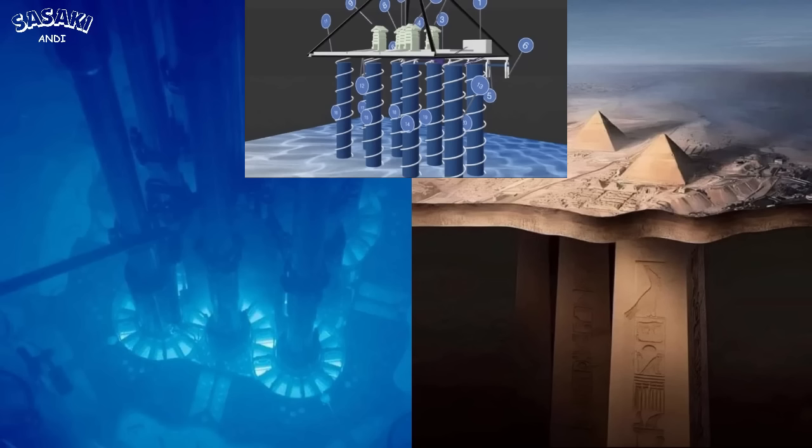We've got this vast underground network potentially representing the Duat, and these cylindrical wells with the spiral pathways could have been used for specific rituals or ceremonies. Maybe they symbolized a descent into the underworld or a cyclical journey of the soul. And those hieroglyphs on the pillars, maybe they provided guidance for the journey or told the story of the afterlife.